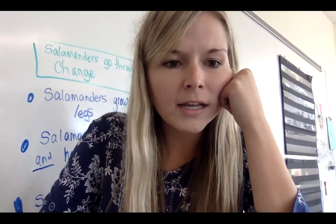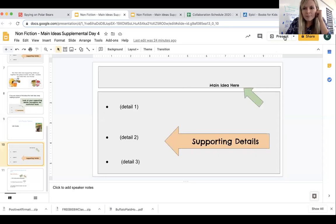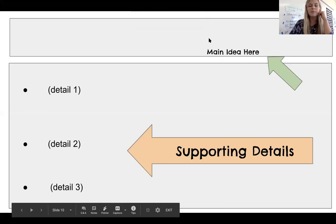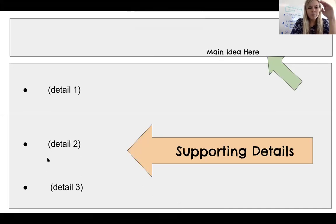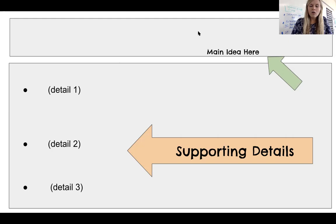I'm going to go back to our presentation now so that you can see how I want you to be writing your main idea and the supporting details. You'll see that I put my main idea on the top in that box and then I have bullet points below it with my supporting details. This graphic organizer is called boxes and bullets. This is how you will be expected to write your main idea and the supporting details. It's nicely organized — it shows that the supporting details help hold up that main idea. They all fall under the category of that main idea, and all of my supporting details were about salamanders going through change.